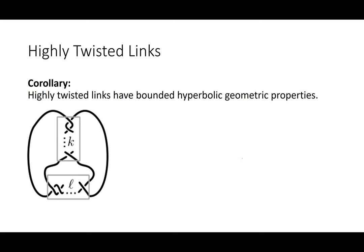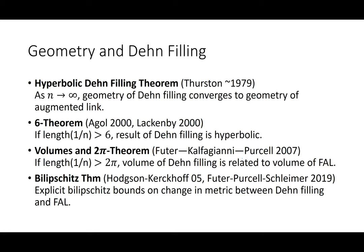Thurston was the first to prove that as slope lengths go to infinity, the geometry of the Dehn filling converges. There are more concrete explicit results: if the length of the slope is at least six, you get a hyperbolic Dehn filling; if the length is at least 2π, you get bounds on the volume. The program of Hodgson and Kerckhoff uses other metrics, and Dave Futer, Saul Schleimer, and I extended this to get explicit bounds on the change in geometry.